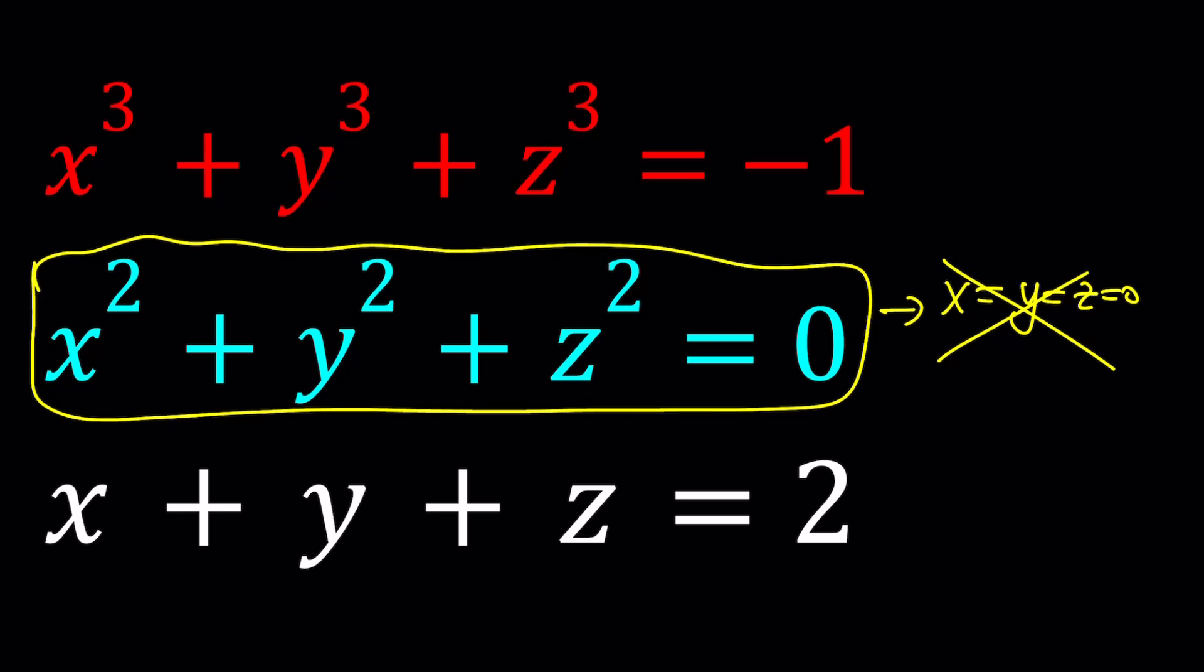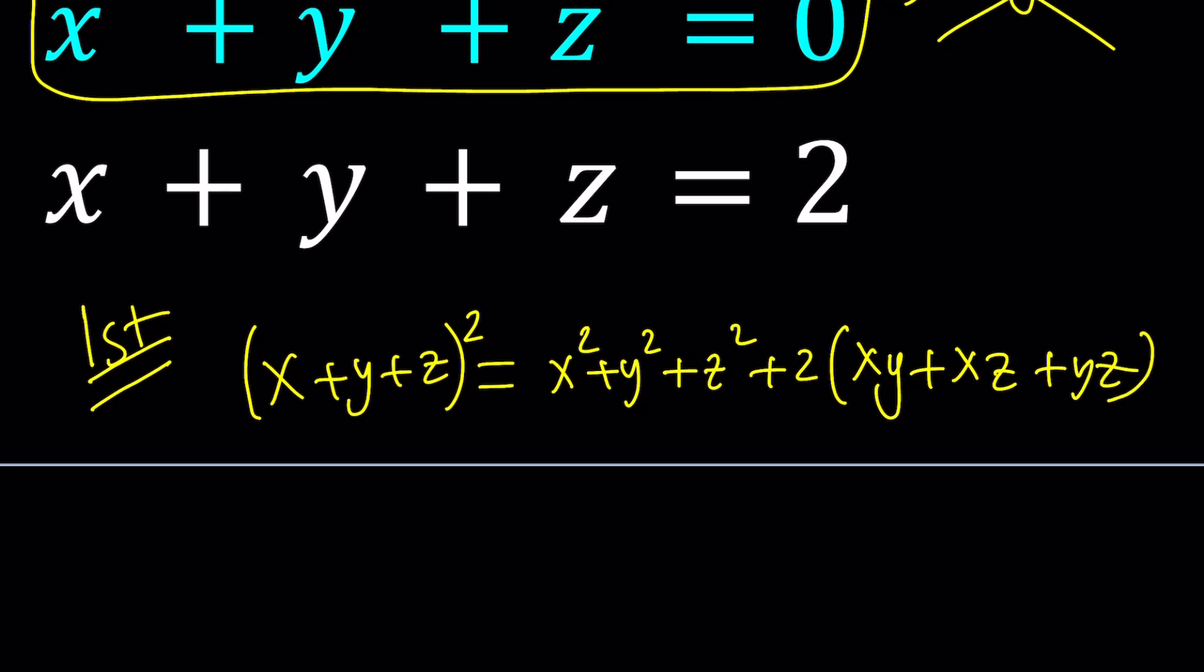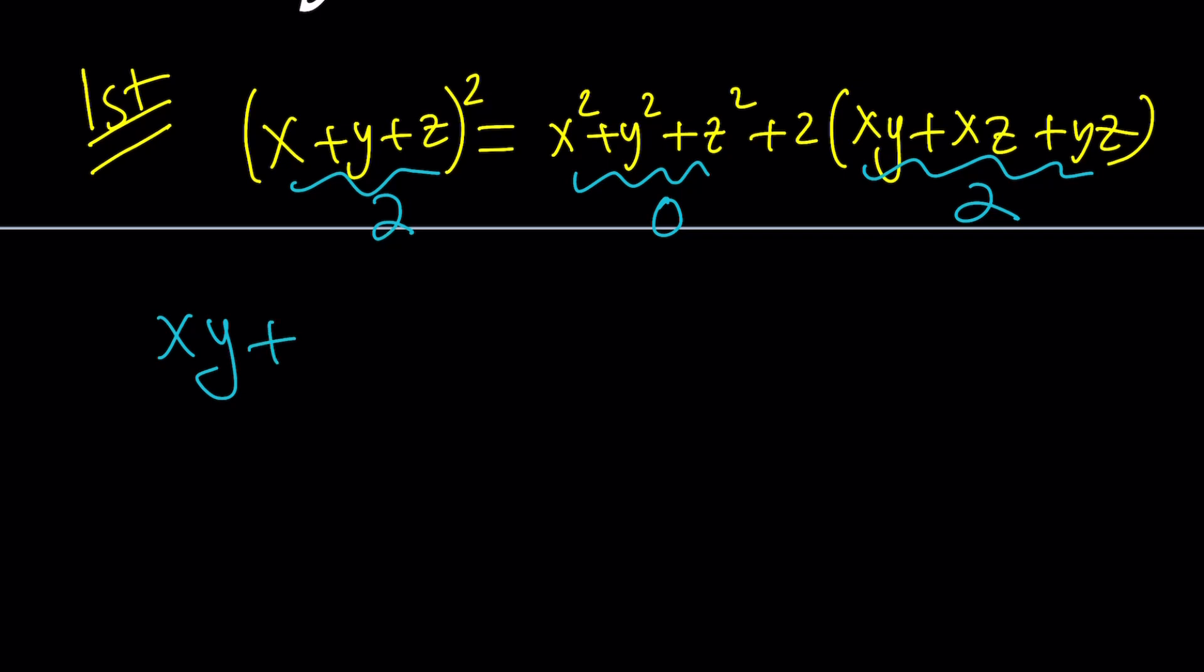Now, first of all, I'd like to take x + y + z with my first method. I want to square it because I do have the sum of squares. So this can be written as x² + y² + z² + 2(xy + xz + yz). Now, we do know that x + y + z = 2 and x² + y² + z² = 0. This gives you what? 2² = 4. Therefore, this is supposed to be 2. Make sense?